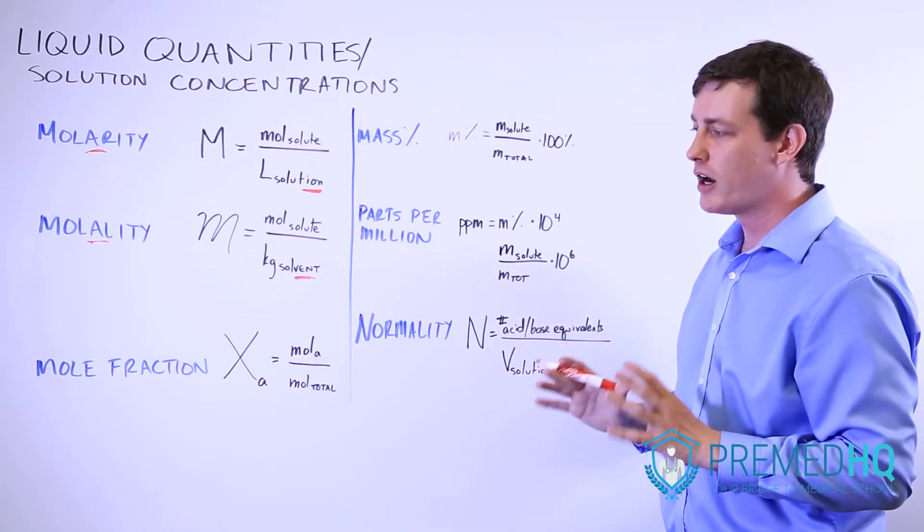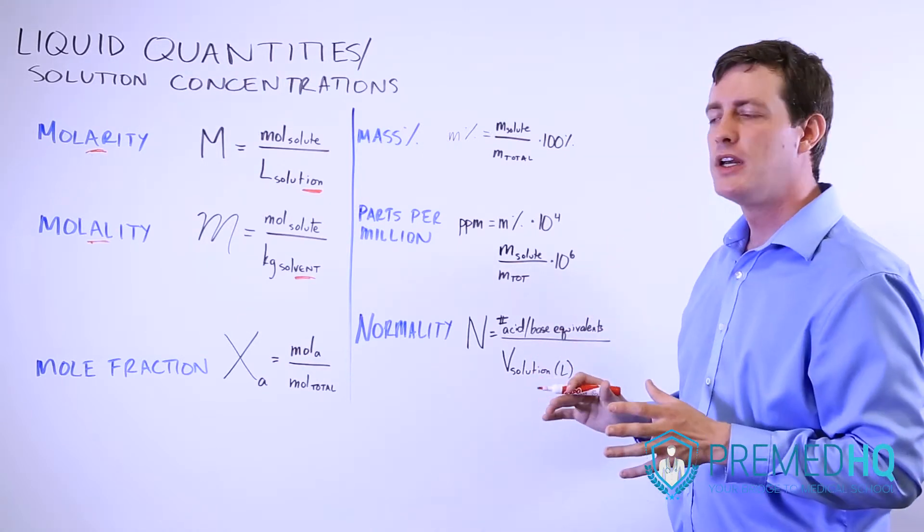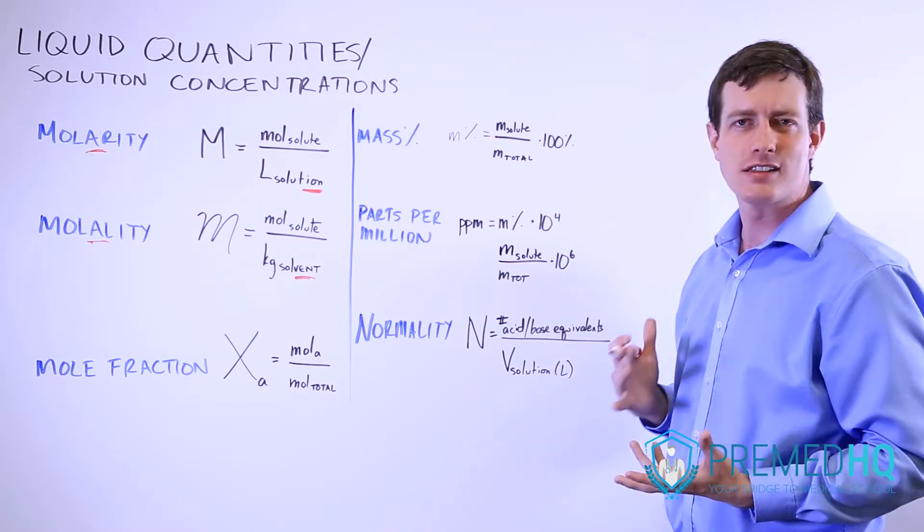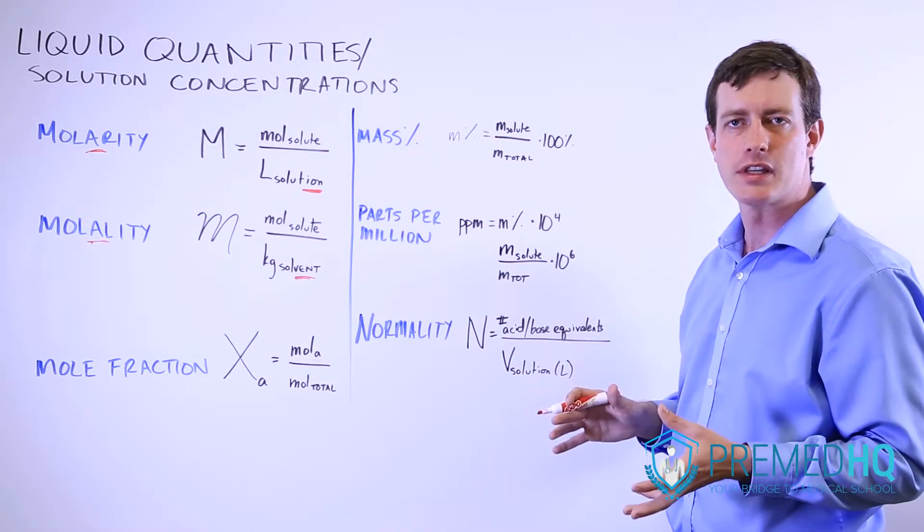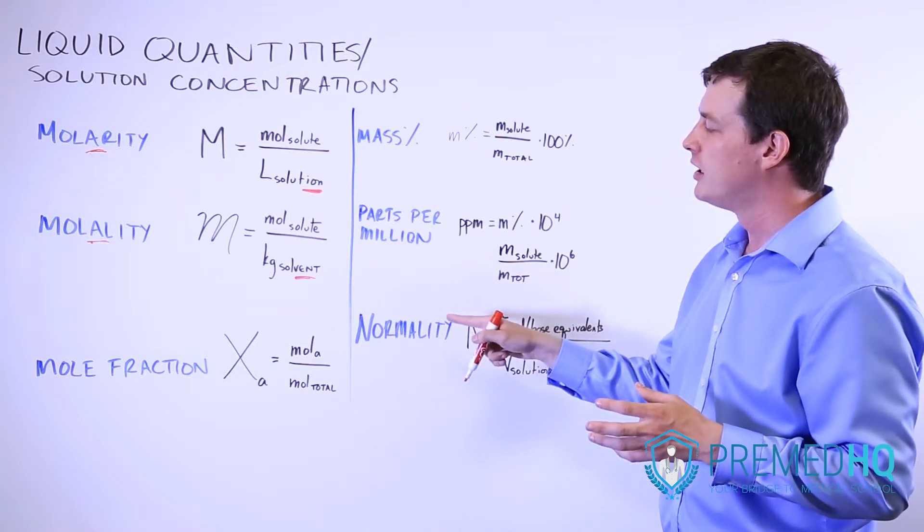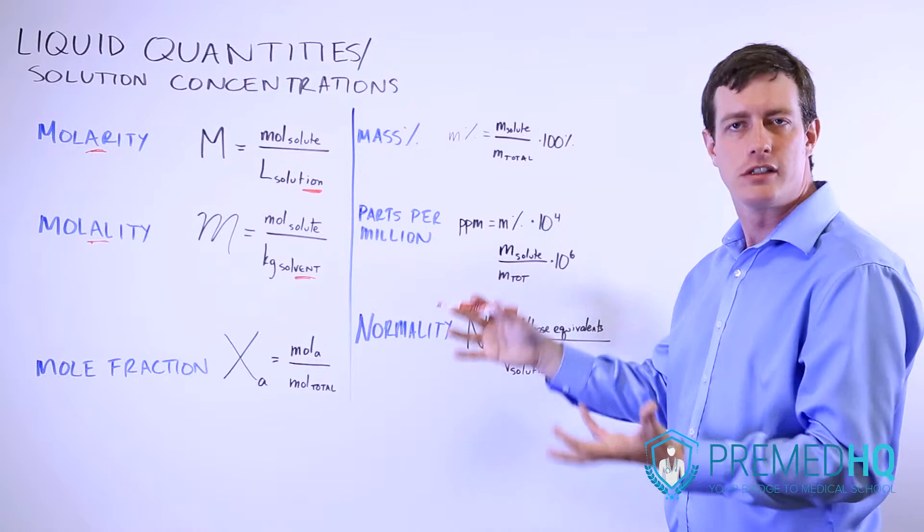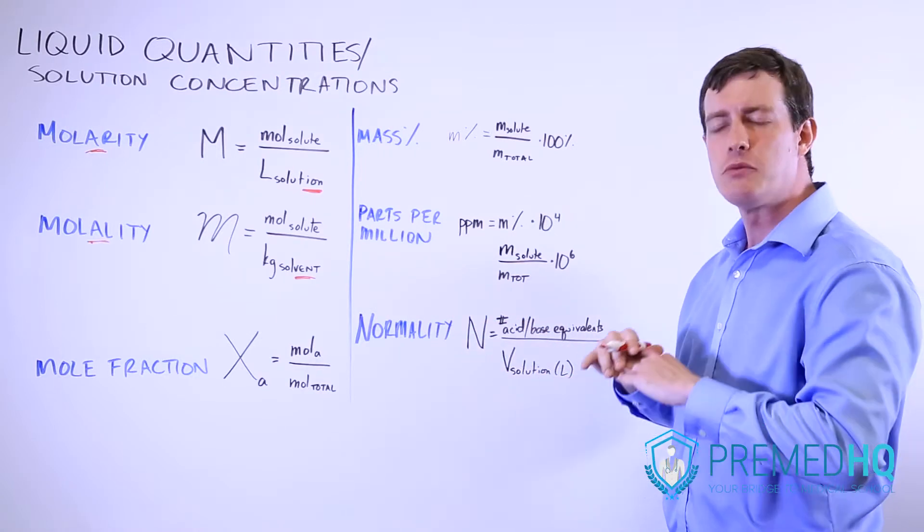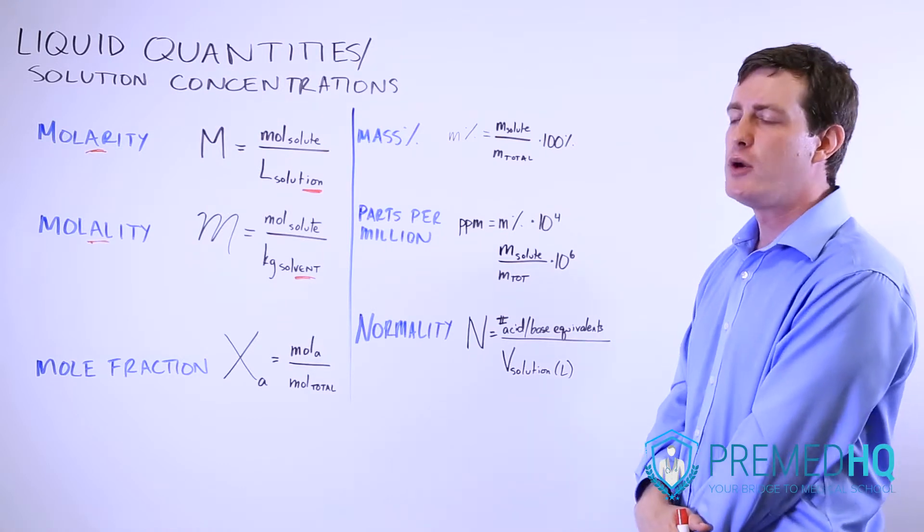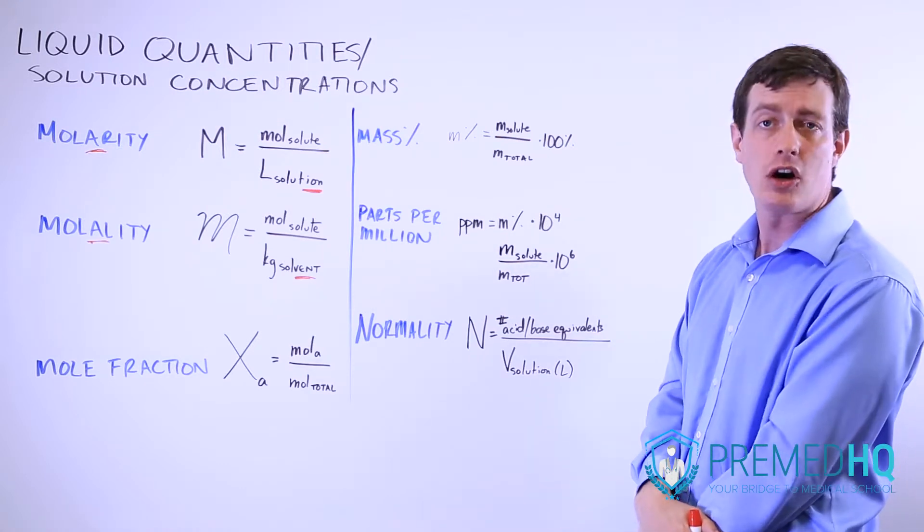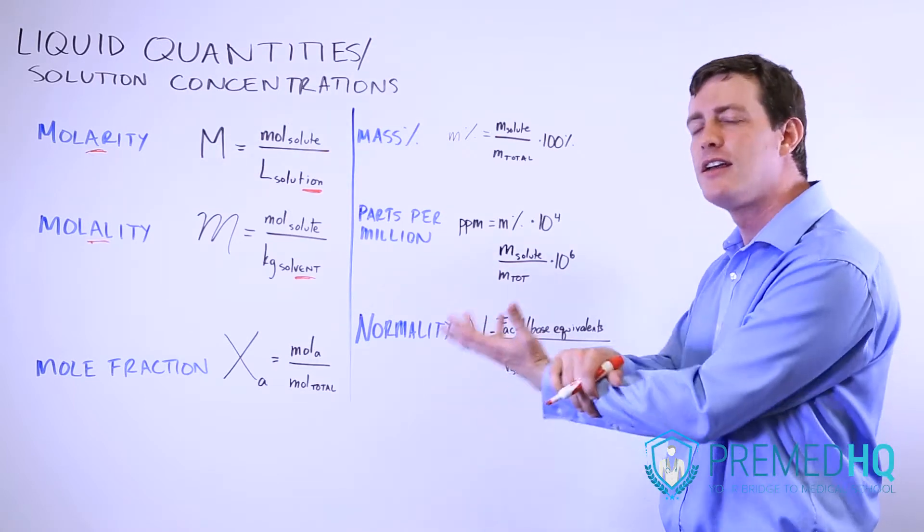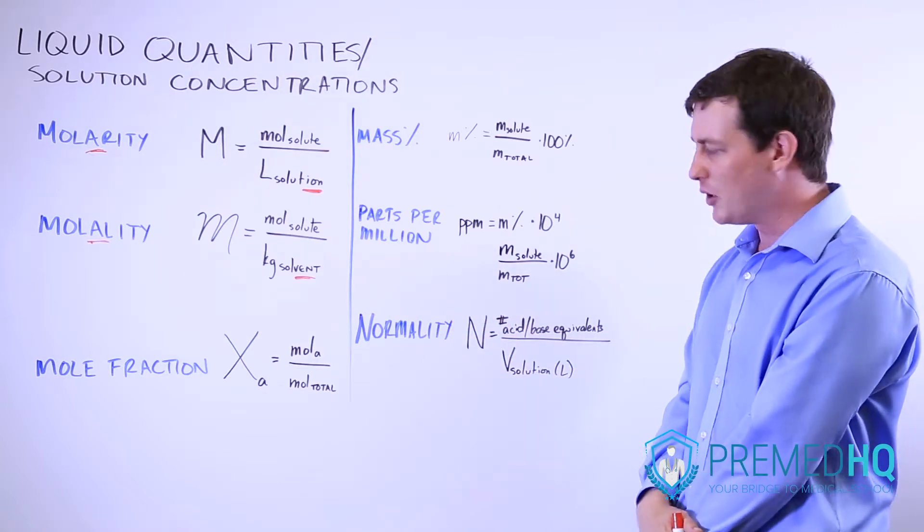One other thing to be aware of, just to really drive this point home, is that it doesn't matter if it's a strong or a weak acid. If it's a weaker acid like an alcohol or something like that, its normality is still based on the number of protons that it could contribute, not that you would expect it to spontaneously when you put it into solution. So if you have a one molar solution of some alcohol, it still has a normality of one because it can donate that number of protons.